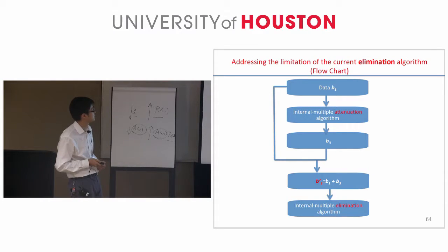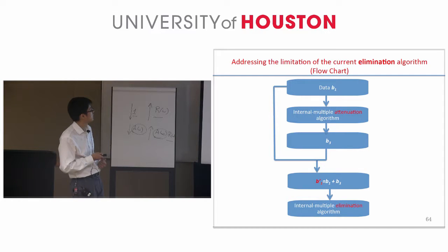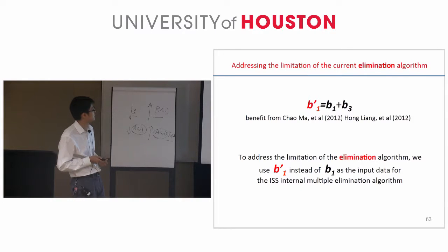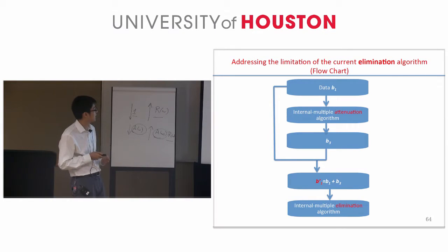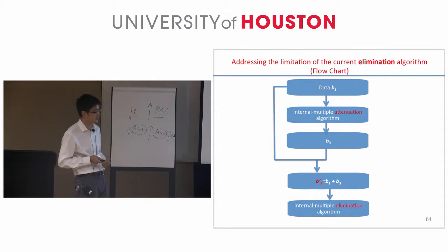Using B1-prime instead of B1: we first use data B1 for the attenuation algorithm to get prediction B3, then calculate B1-prime as B1 plus B3, and use that B1-prime for the internal multiple elimination algorithm.